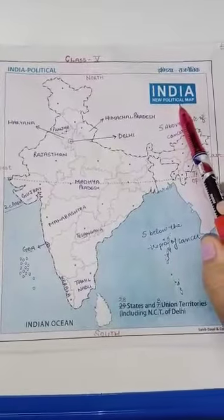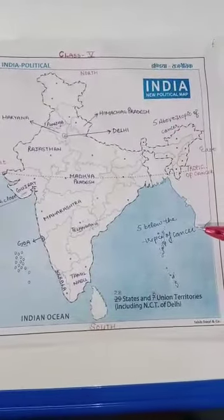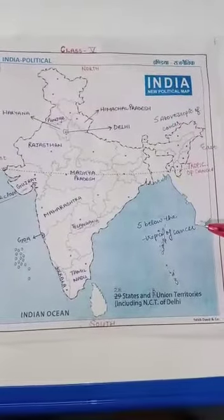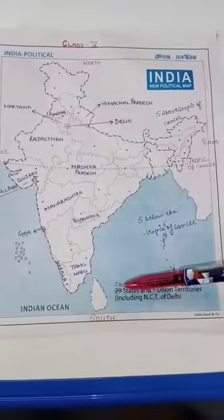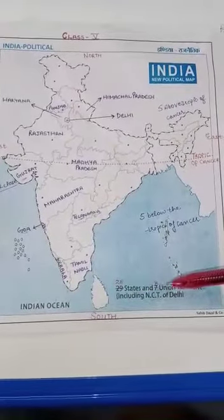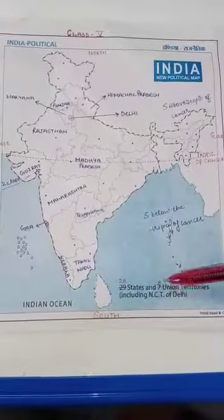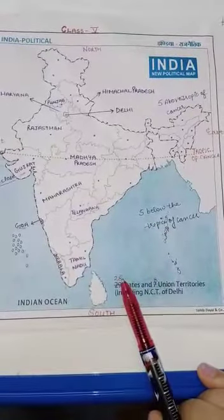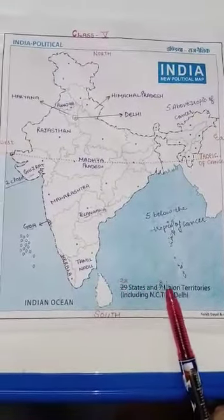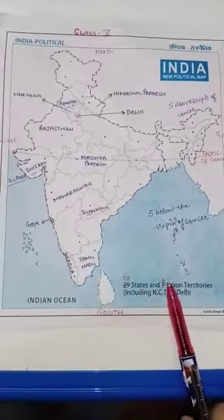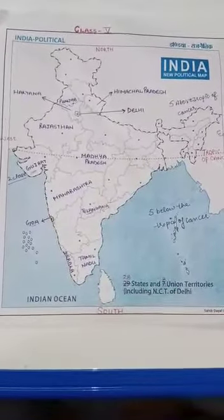In the first term we have a map of states. As you can see here it is written 29 states and 7 UTs. Cut 29, write 28, cut 7, write 8, because Jammu and Kashmir is not a state anymore.